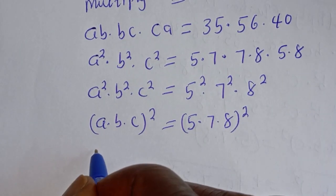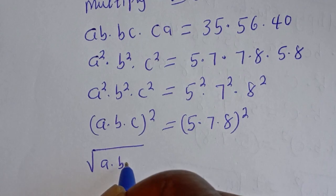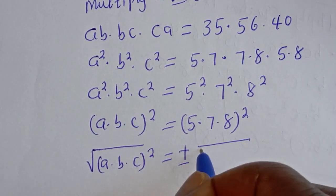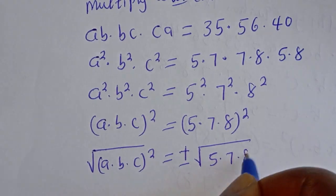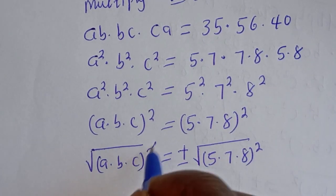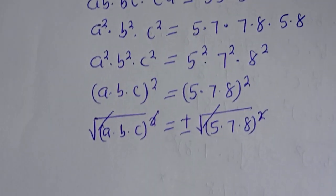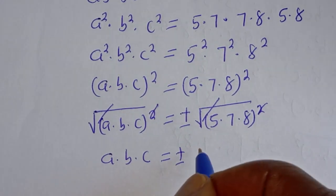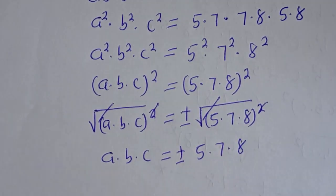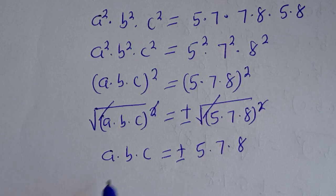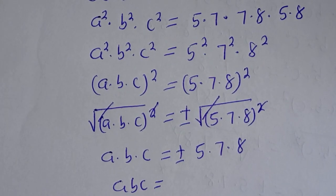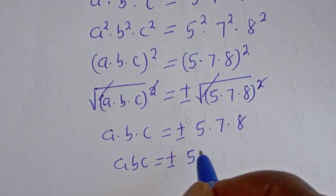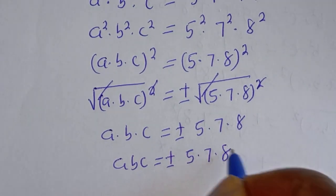Let's take the square root of both sides. The square root of (A multiplied by B multiplied by C) squared is equal to plus or minus the square root of (5 multiplied by 7 multiplied by 8) squared. So ABC is equal to plus or minus 5 multiplied by 7 multiplied by 8. Let's call this equation 4.